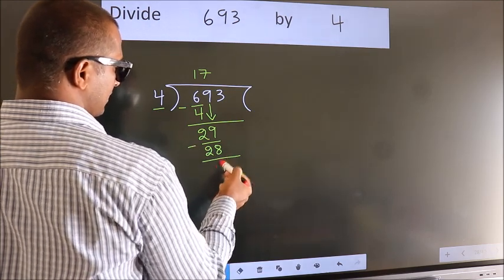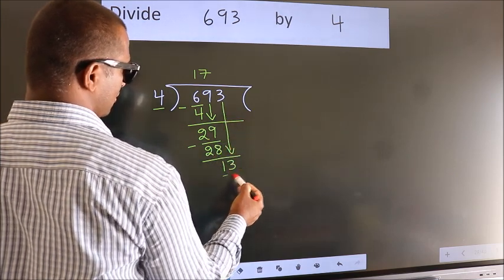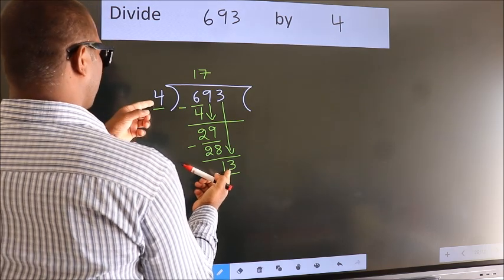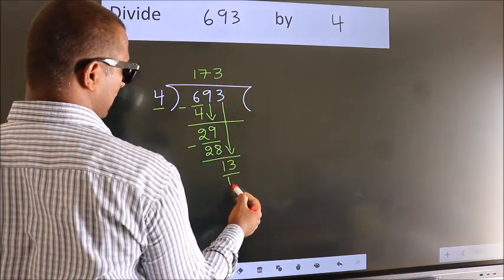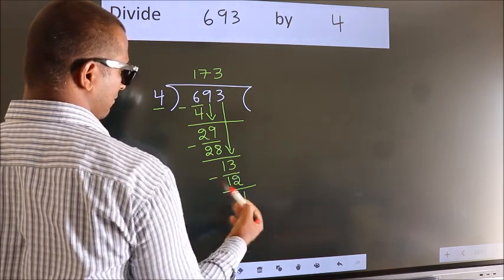After this, bring down the beside number. So 3 down, making 13. A number close to 13 in the 4 table is 4 3s 12. Now we subtract. We get 1.